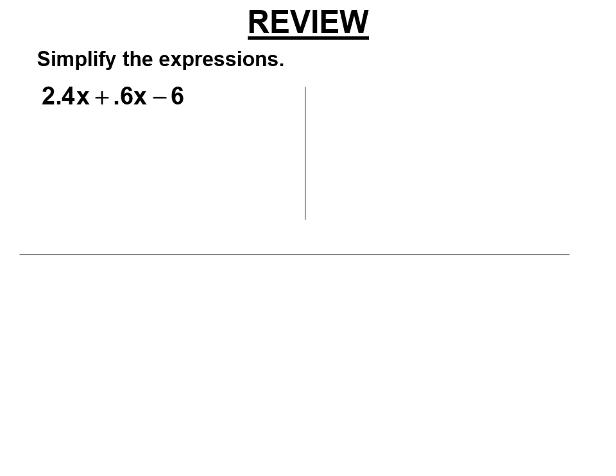So 0.24x plus 0.6x. So 2.4 plus 0.6 is 3. So that's 3x. I'm not going to write 3.0x. 3x minus 6. You combine the like terms.